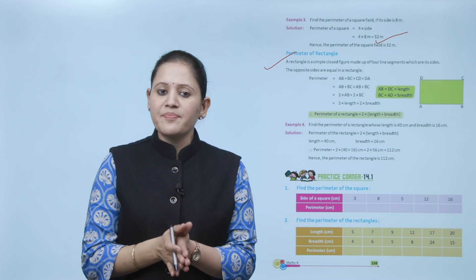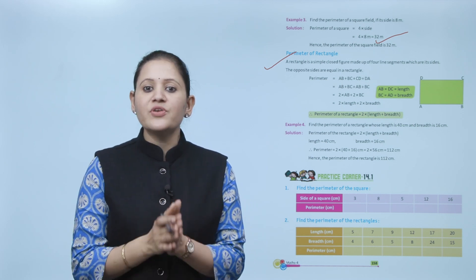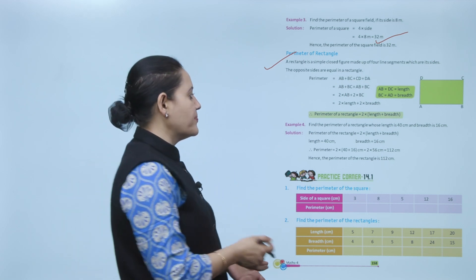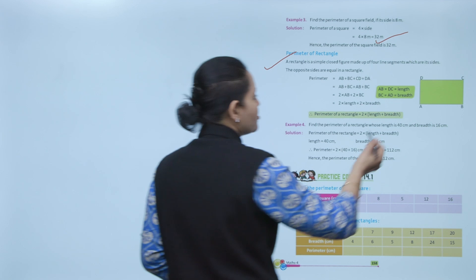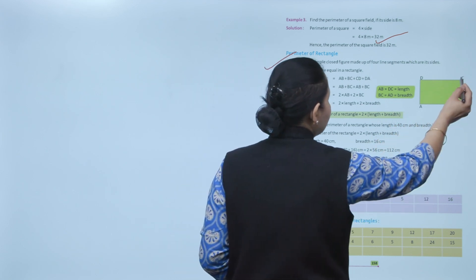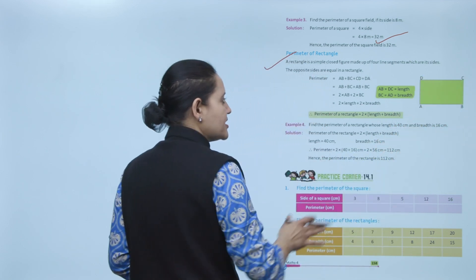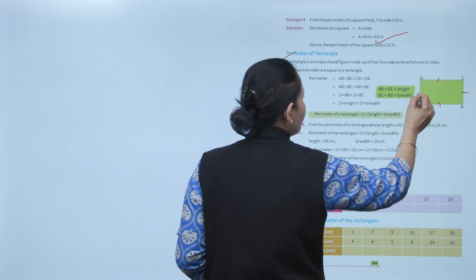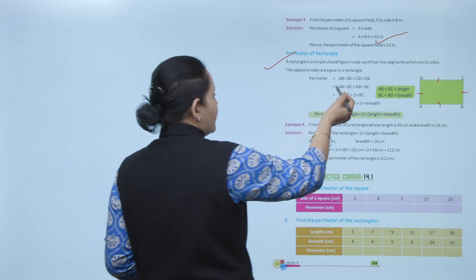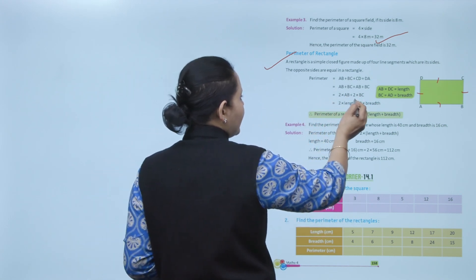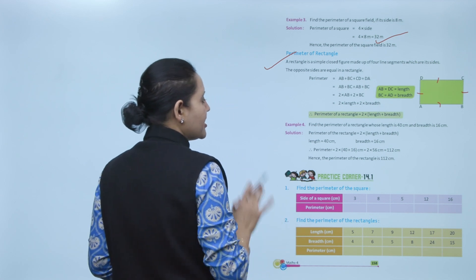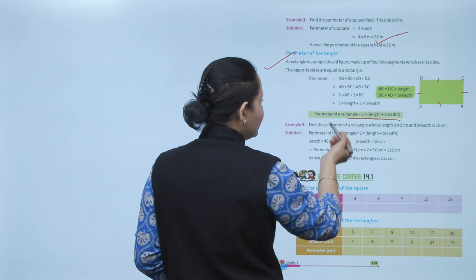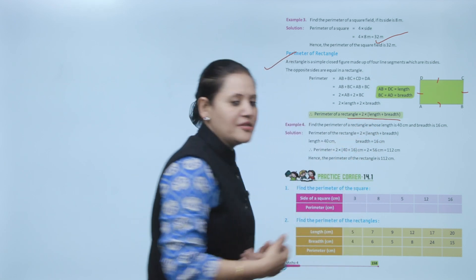A rectangle is a simple closed figure made up of four line segments. The opposite sides of a rectangle are equal. So the perimeter equals AB plus BC plus CD plus AD. Since opposite sides are equal, AB equals DC and BC equals AD, so we can write it as 2AB plus 2BC, meaning perimeter equals 2 into (length plus breadth).